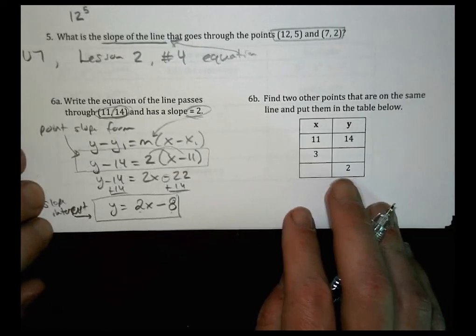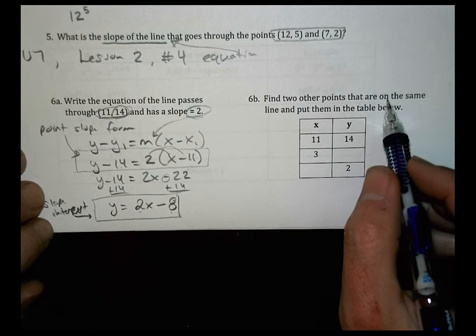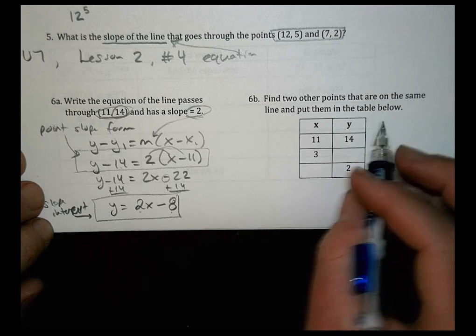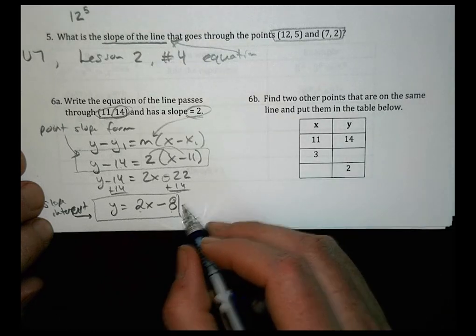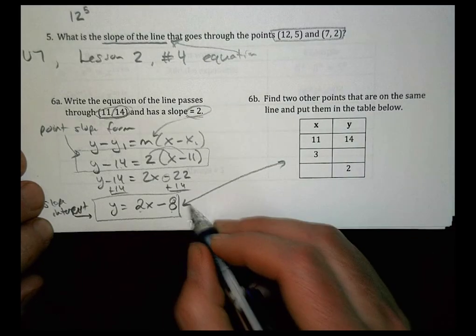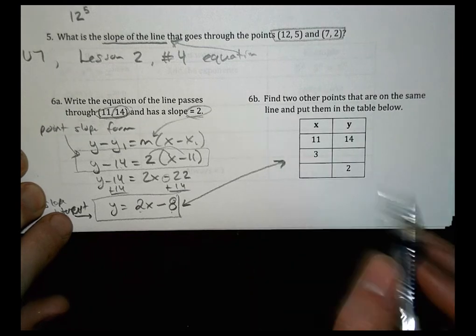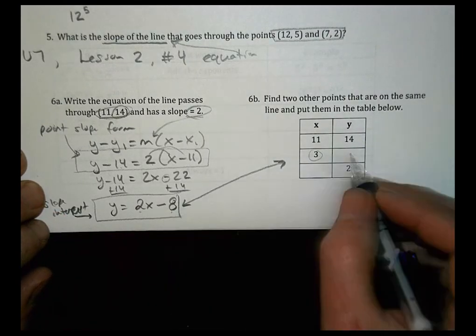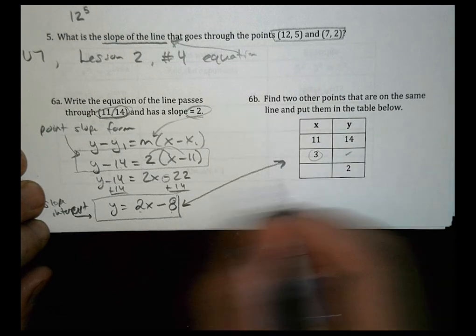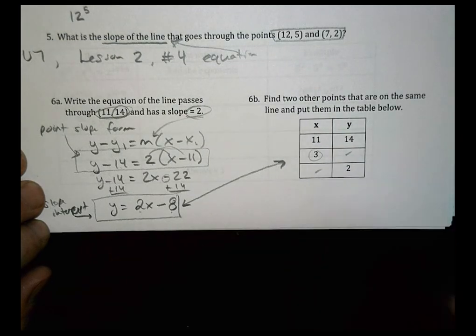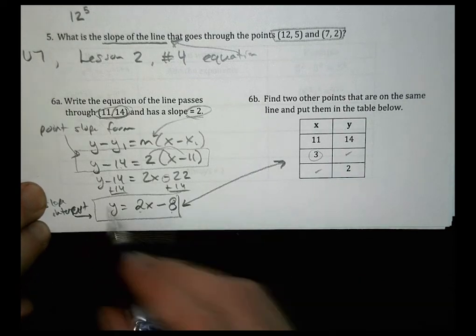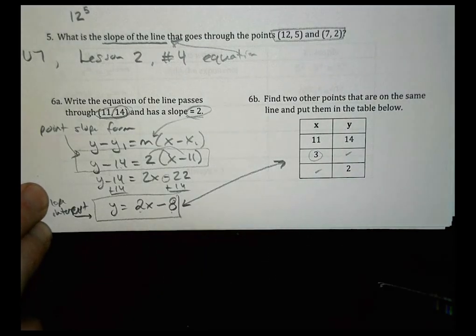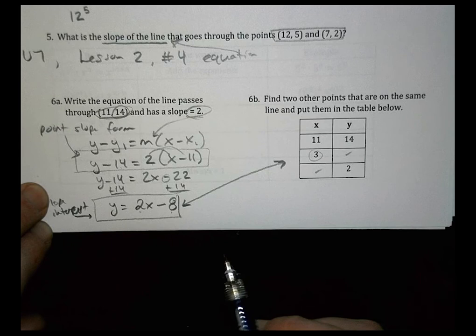Now it says to find two other points that are on the same line and put them in the table below. So it wants us to then use this equation here. And using the equation, what other points can we find? So you're going to substitute 3 in there to solve for Y, and then you'll substitute Y into there to solve for X. So I'll let you solve those on your own just by using the equation that we worked out together to get those two missing values from that equation.